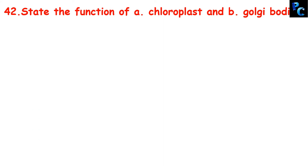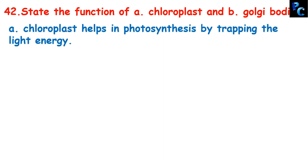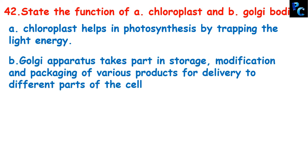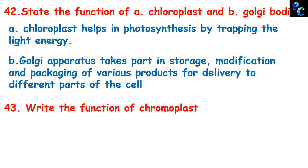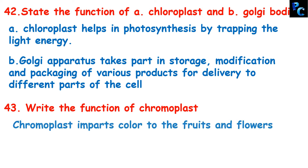State the function of chloroplast and Golgi bodies. Chloroplast helps in photosynthesis by trapping light energy — solar energy — and because of photosynthesis plants produce food and the byproduct is oxygen which we breathe. Golgi apparatus takes part in storage, modification, and packaging of various products for delivery to different parts of the cell. Non-green chromoplast imparts color to fruits and flowers, while the green chromoplast — chloroplast — helps in photosynthesis.